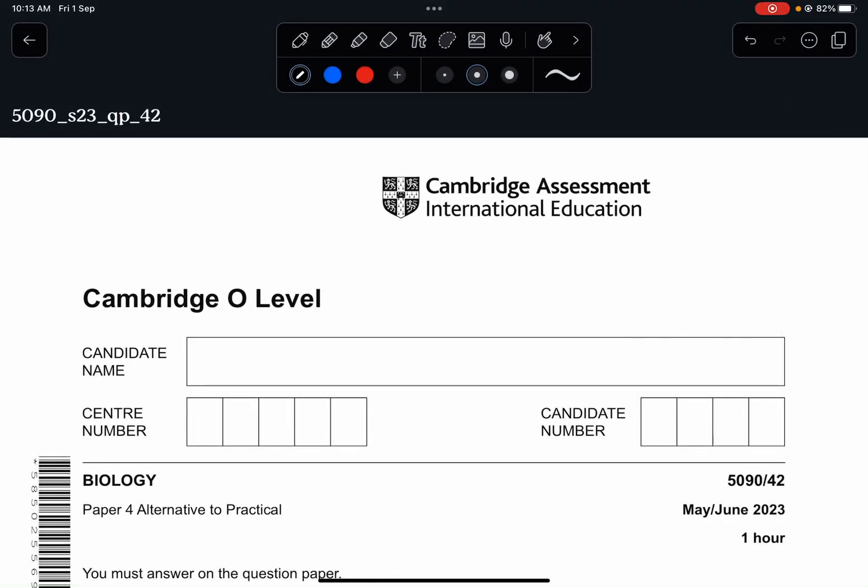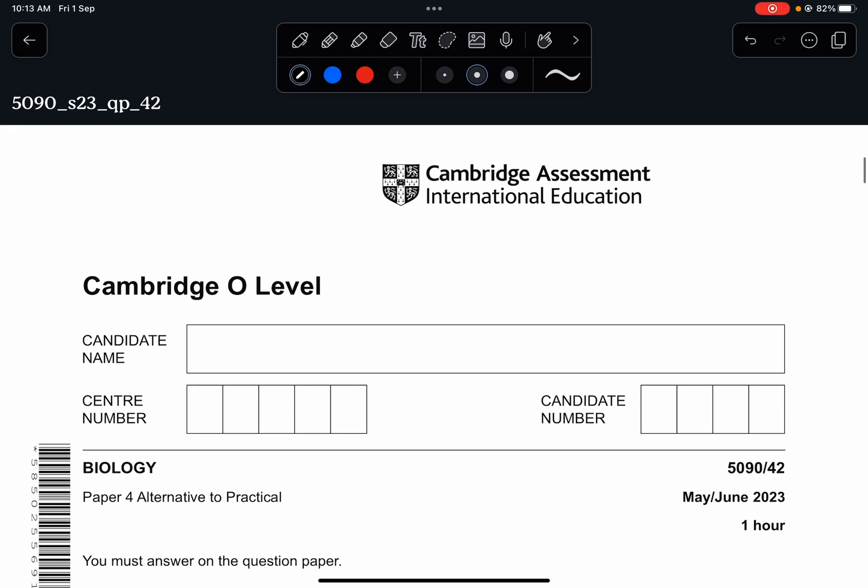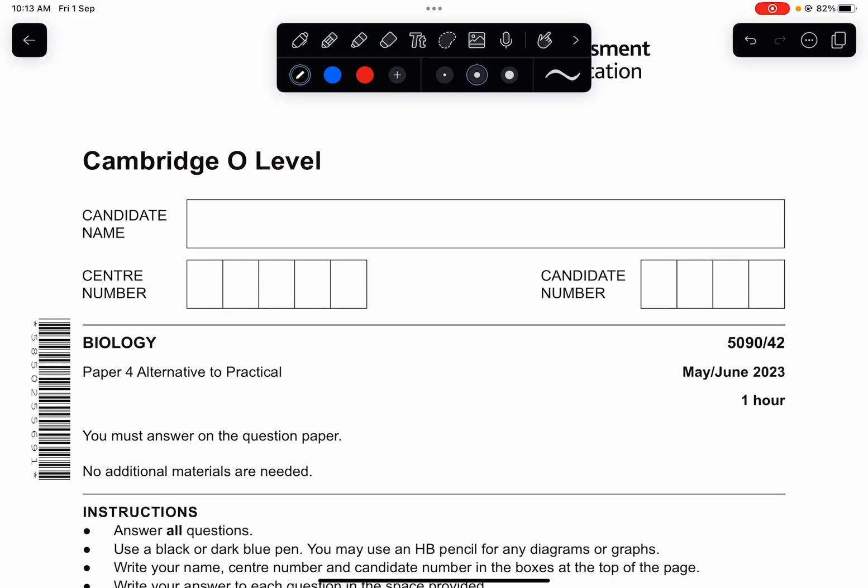Hey guys, welcome back to a new video by Biology with Zhang Xuan. So today we are going to do the 5090-42 May-June 2023 paper for alternative to practical. This is a viewer requested paper, but also there's a chance for me to help you guys more other than just the IGCSE biology scope. The O-level paper form will be slightly different comparing to how the structure of the papers in IGCSE, but this is the same thing as paper 6 in IGCSE biology.